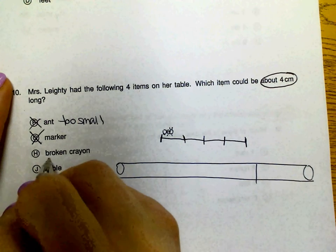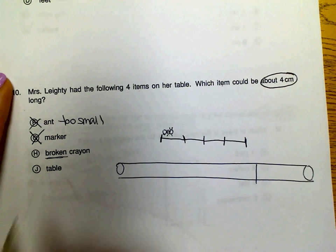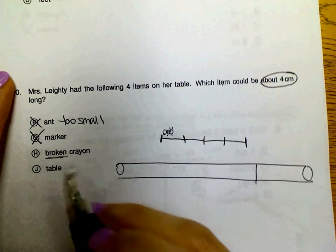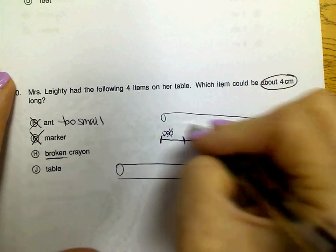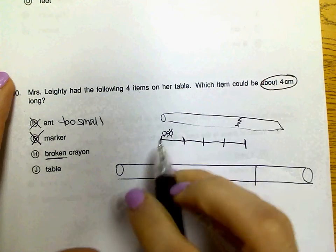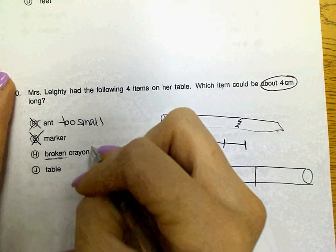A broken crayon. Make sure that they're paying attention to these adjectives. Broken crayon. So if they had a crayon be about that long, but if it was broken, it could definitely be about four centimeters. So we're going to put that on our maybe list.